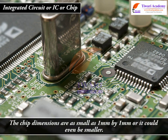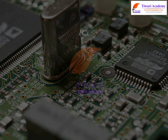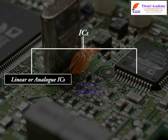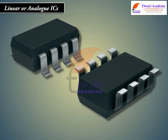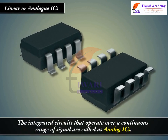The chip dimensions are as small as 1 mm by 1 mm, or even smaller. ICs can be grouped into two categories: Linear or Analog ICs, and Digital ICs. The integrated circuits that operate over a continuous range of signal are called Analog ICs.